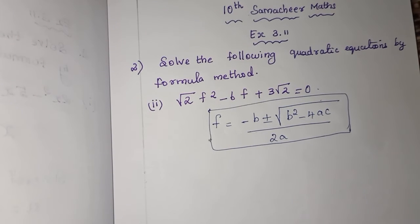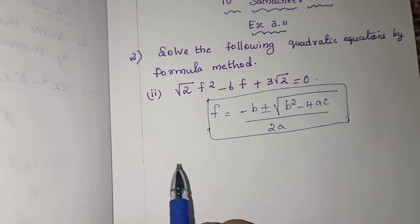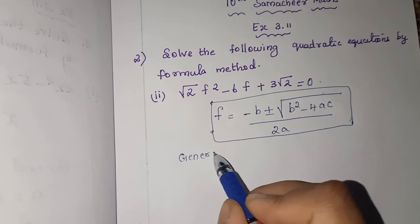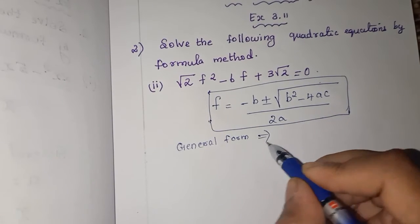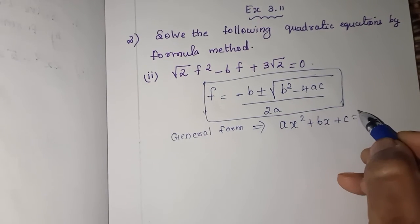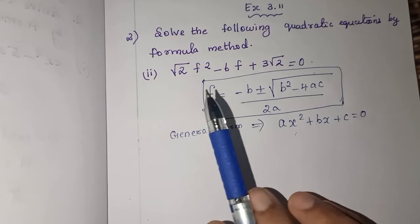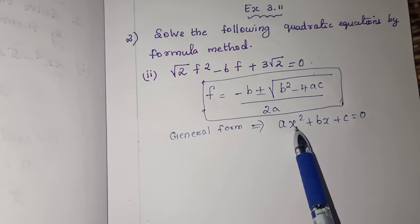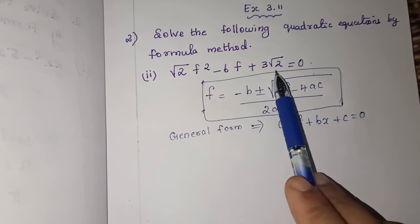Then only it registers well in your mind. Now you have to compare this equation with the general form. The general form of a quadratic equation is ax² + bx + c = 0. Don't get confused by seeing f here and x there. Whatever variable, generally we write as x. Here x² means f². Here x means f. Here constant means this term.